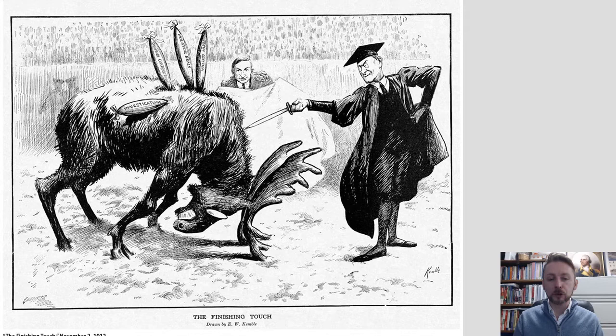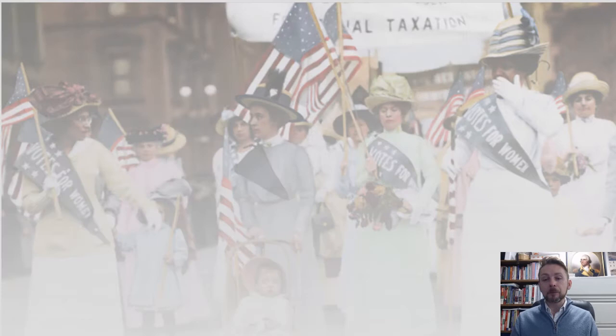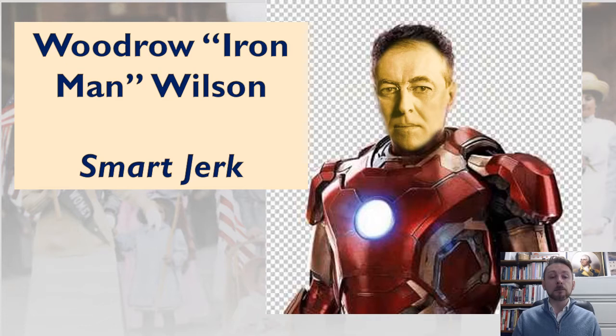Professor Wilson, shown here in a cartoon doing the finishing touches to Teddy Roosevelt's bull moose, is clearly an educated man — he wears the mortarboard signifying college graduate, because he is a PhD. He's America's most educated president to this point, and his background includes being president of Princeton, where he taught, as well as being governor of New Jersey. I liken him to Iron Man — he's a bit of a jerk because he thinks he knows it all, he thinks he's better than everybody else, and he's pretty smart.